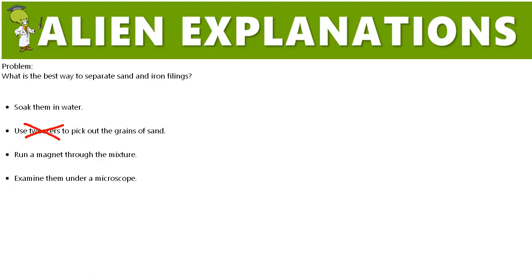Think about what sand and iron are composed of. Sand is made from the breaking down of rocks and stones over a long period of time, and iron is a type of metal. How could you separate these two materials based on their differing properties?